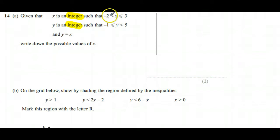After giving us that information, it tells us that x can be anything greater than negative 2 and less than or equal to 3, so it does include 3. y is an integer such that it could be negative 1 or anything greater than that, up to but not including 5, and they both have to be the same. Write down the possible values of x.